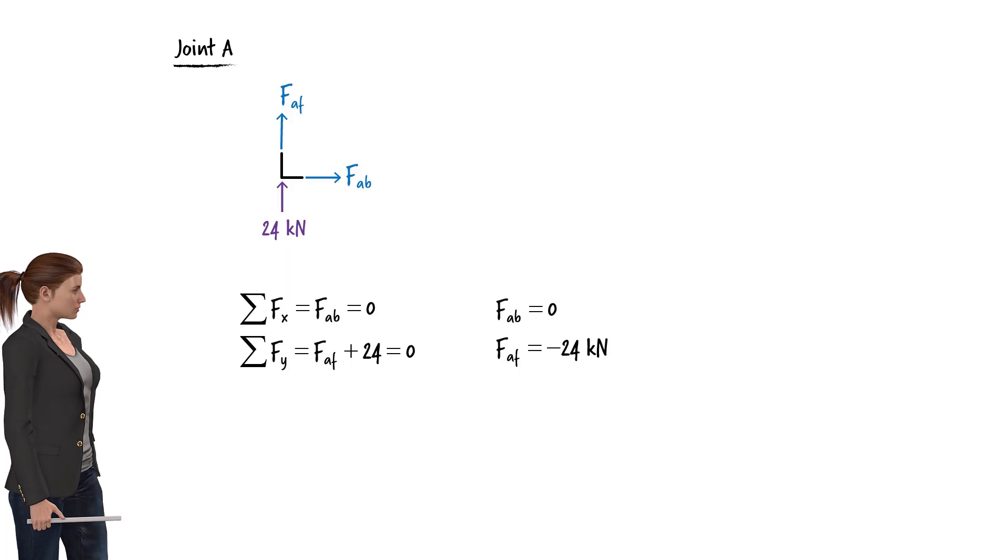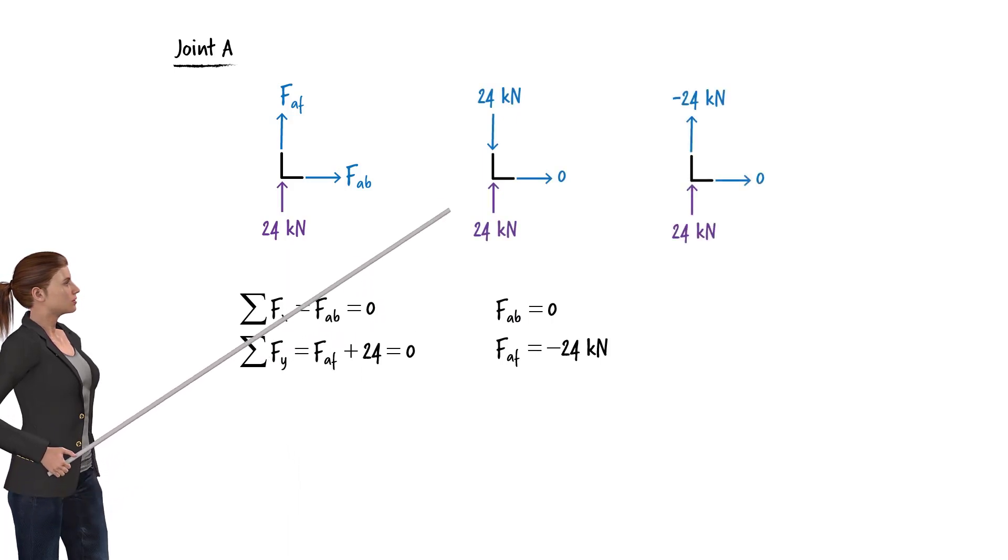Now that we know the nature of the axial force in member AF, we can show and write the force either this way or this way. That is, we can either flip the direction of the force arrow and write positive 24 kilonewtons for the force magnitude, or we can keep the arrow in the assumed direction but write negative 24 kilonewtons for its magnitude. Either way, we are stating that the force in member AF is compressive and has a magnitude of 24 kilonewtons.